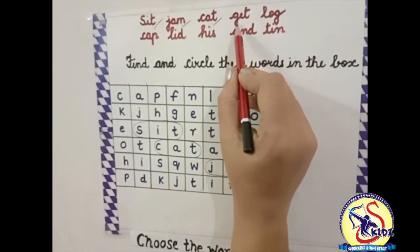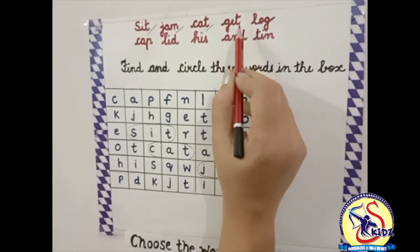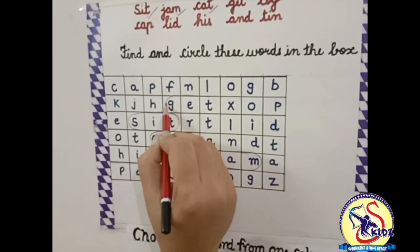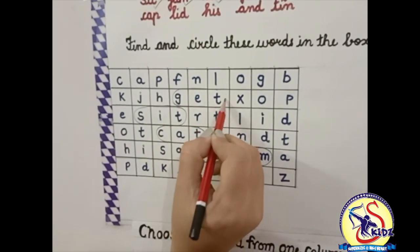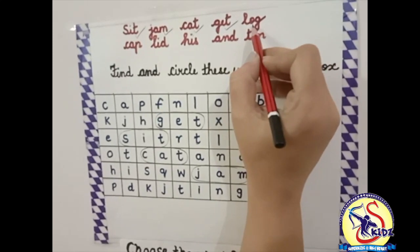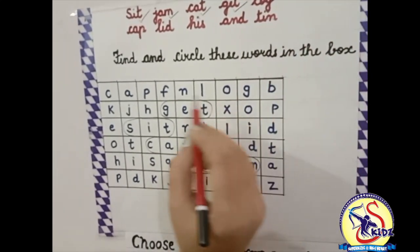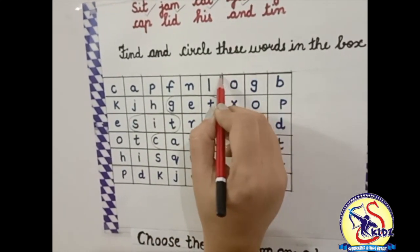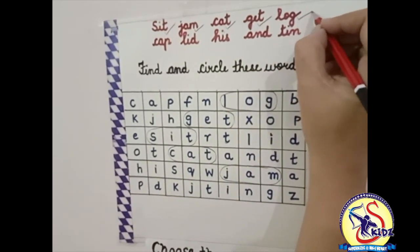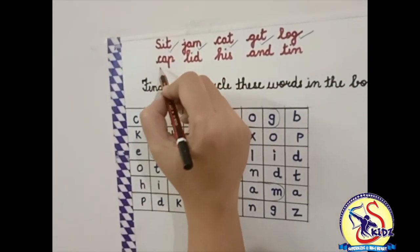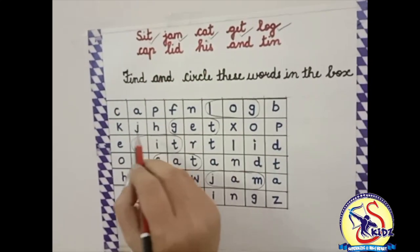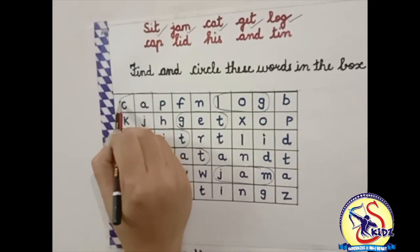Our next word is G-E-T, get. Let's find out the word get — yes, this is the word get, circle this word. Next, L-O-G, log. Let's see where the word log is — yes, here is the word log, now circle this word. Let's move to the next word. The next word is C-A-P, cap. Yes, here is the word cap — circle this word.